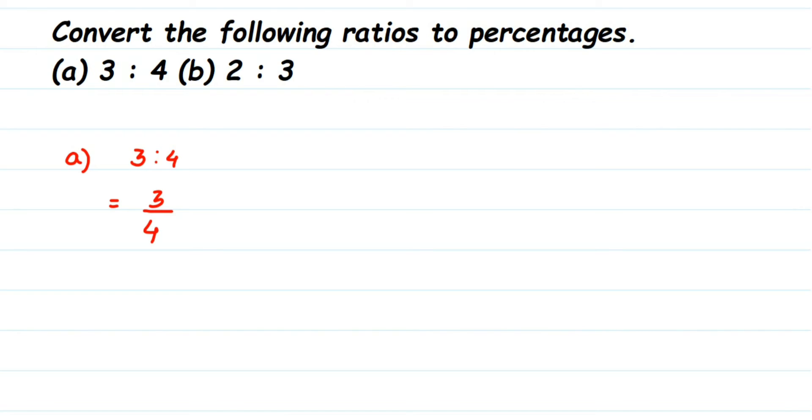And once you have written it in fractional form, we're going to find out the percentage. Now how to find out the percentage? You have to just multiply by 100. So this will be equal to multiply by 100 percentage. Whenever you have to find out the percentage, multiply the number by 100 and the percentage sign will be there.